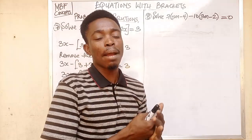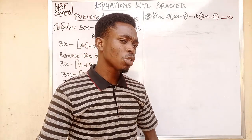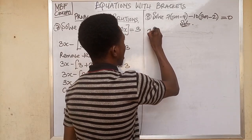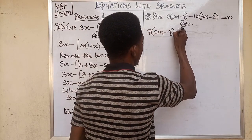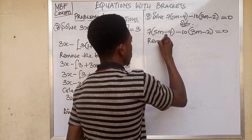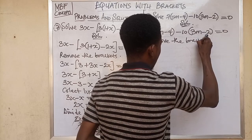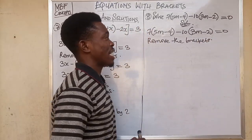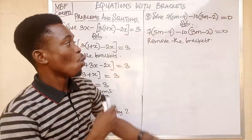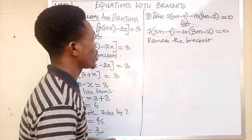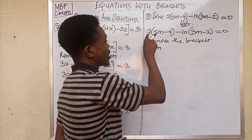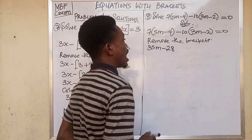We pull down the equation: 7(5m - 4) - 10(3m - 2) = 0. Then we remove the brackets by identifying the multiplication factors. For the first bracket the multiplication factor is 7, and for the second bracket it is minus 10. So 7 times 5m gives 35m, and 7 times minus 4 gives minus 28. We are done opening the first bracket.